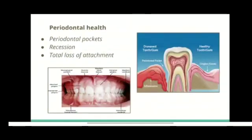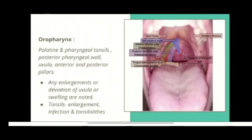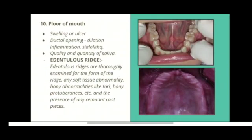For periodontal health, we are concerned with periodontal pockets, recession, and total loss of attachment. For the palate, we look at its color, shape, any deviation, swelling, or ulcers. In the oropharynx, the structures examined include the palatine and pharyngeal tonsils, posterior pharyngeal wall, uvula, and anterior and posterior pillars. We look for any enlargement or deviation of the uvula, and swelling in tonsils — enlargement, infection, and tonsilloliths are noted.